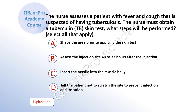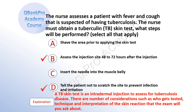The nurse assesses a patient with fever and cough that is suspected of having tuberculosis. The nurse must obtain a tuberculin skin test. What steps will be performed? Select all that apply. A, shave the area prior to applying the skin test. B, assess the injection site 48 to 72 hours after the injection. C, insert the needle into the muscle belly. D, tell the patient not to scratch the site to prevent infection and irritation. The correct answer is B and D. Explanation: A TB skin test is an intradermal injection to assess for tuberculosis disease. Considerations include who gets tested, technique, and interpretation of the skin reaction.